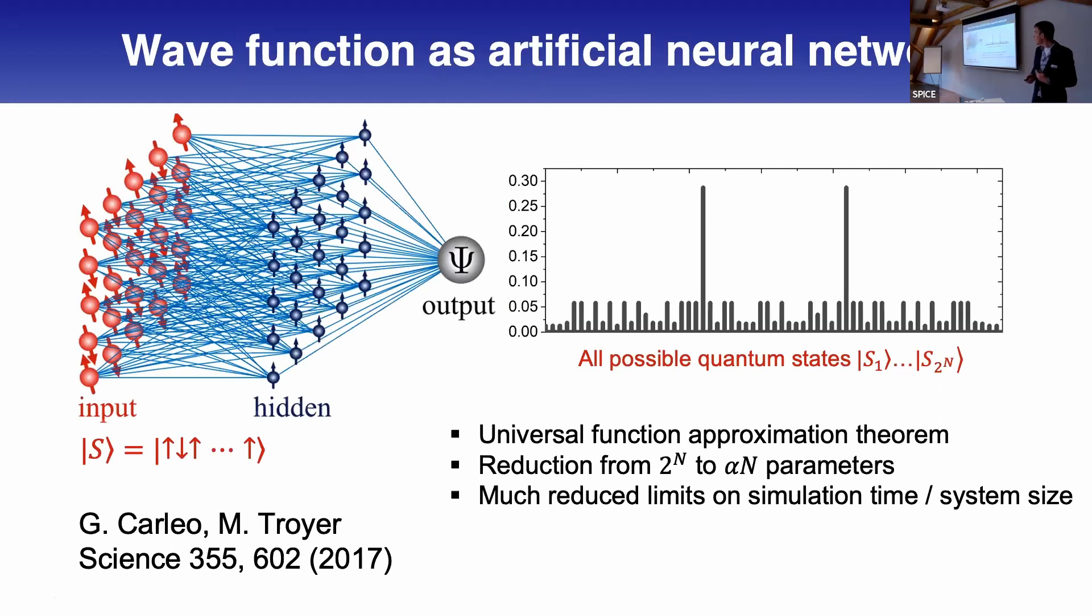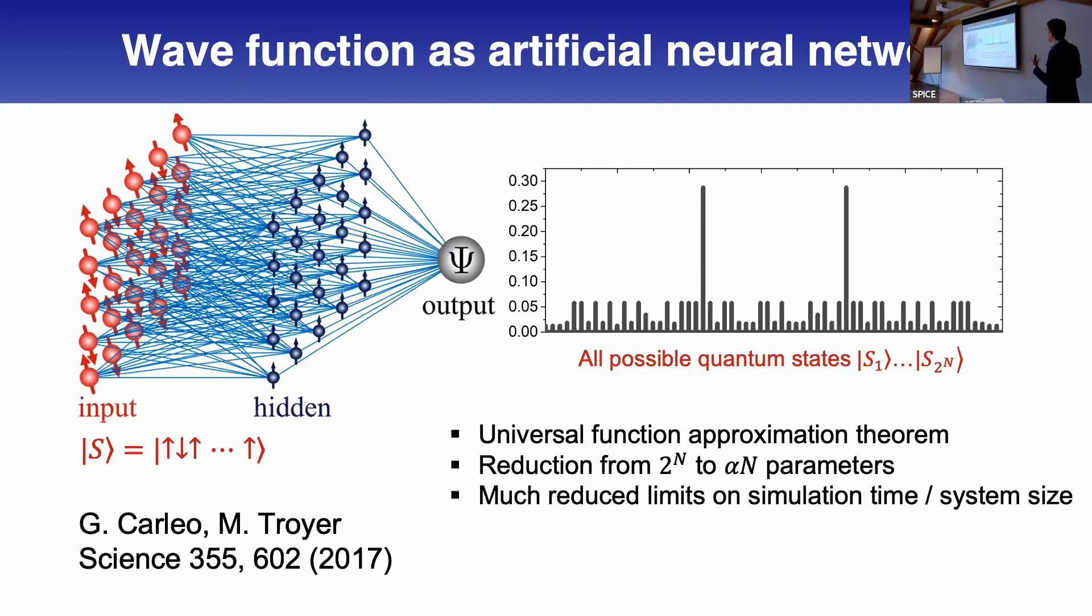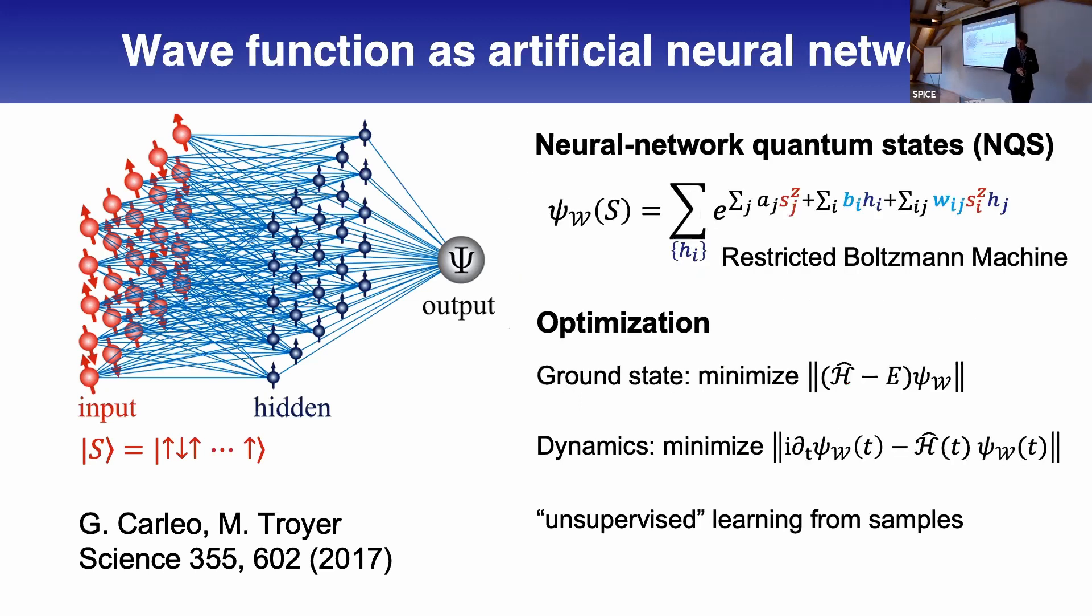People came with the idea to approximate this in a different way. Instead of storing all these states, you train a neural network to predict for any given input state the amplitude of the output state. You have a universal function approximation theorem, which states that any sufficiently wide or deep neural network can approach such complex functions. That means you have much reduced limits on simulation time and system sizes.